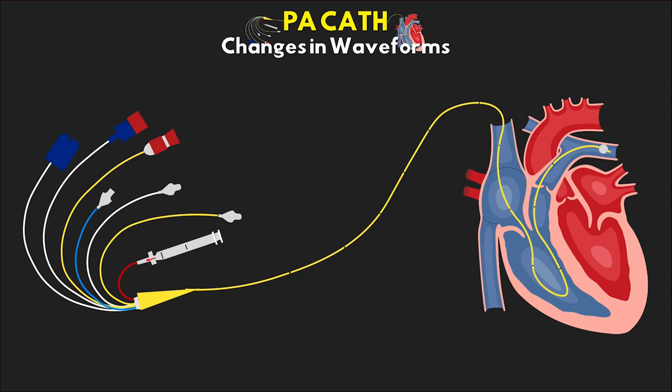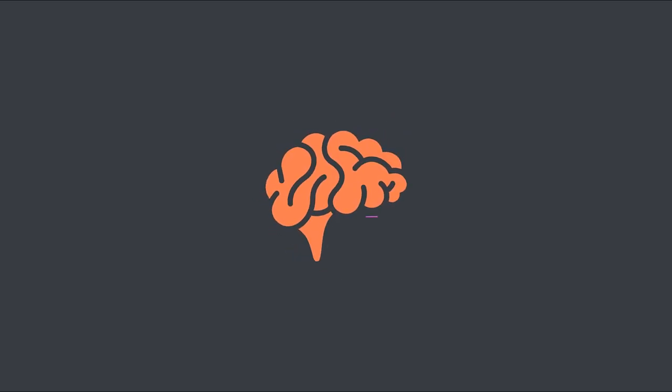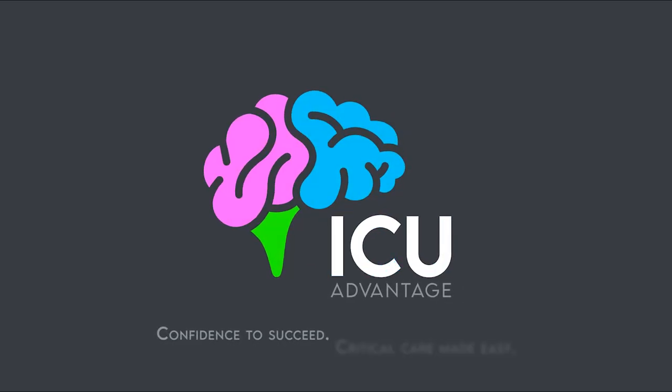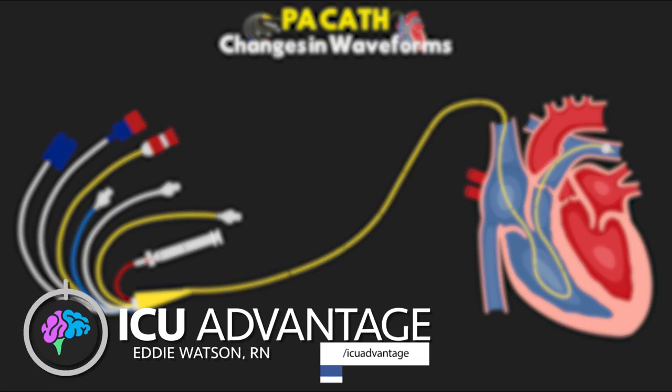For the last several lessons we've reviewed a lot of normal aspects of patients with PA catheters. Now having all that as a foundation, it's really time that we start to discuss some changes that we see, in particular with the waveforms and the values we get from this catheter. Welcome back to another video lesson from ICU Advantage.